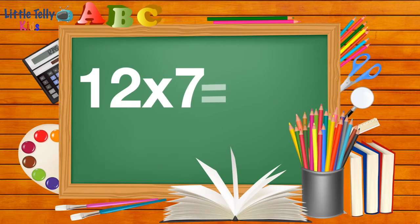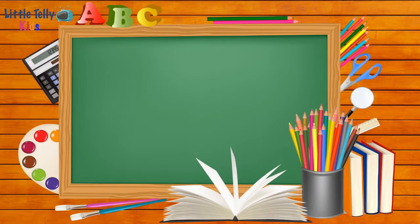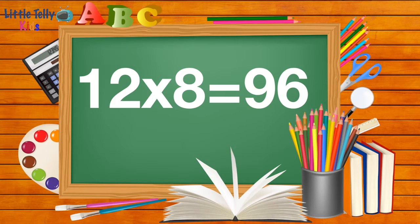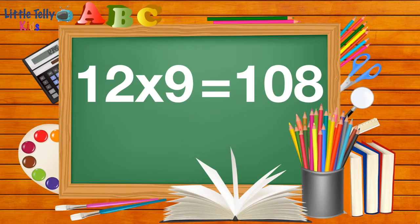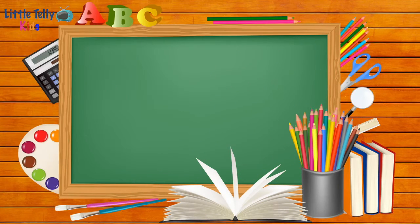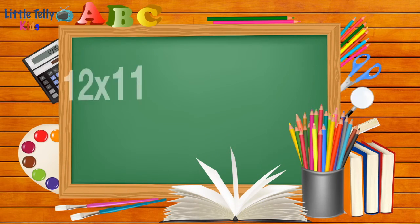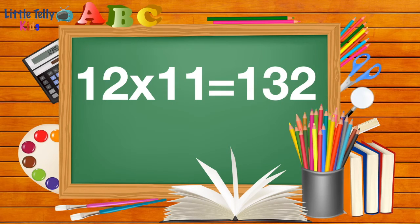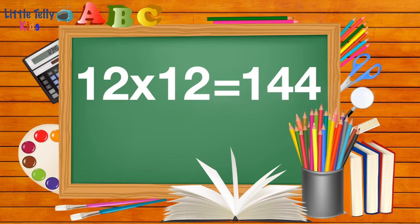12 sevens are 84. 12 eights are 96. 12 nines are 108. 12 tens are 120. 12 elevens are 132. 12 twelves are 144.